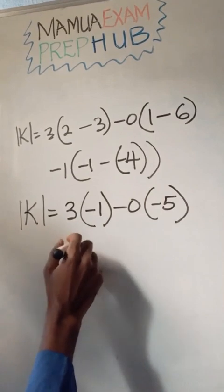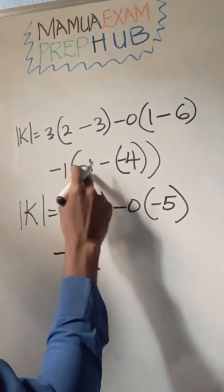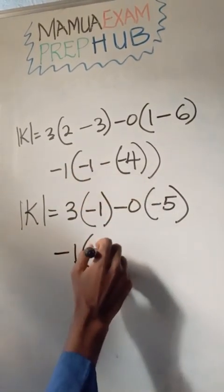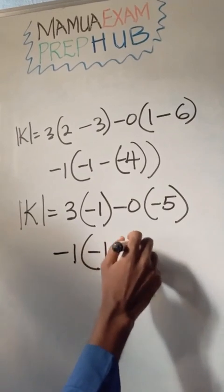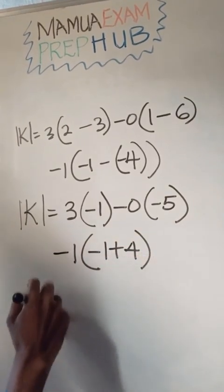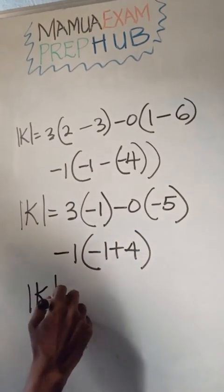And I have minus 1. Minus 1 is going to be plus. Minus 1 plus 4. So the determinant K is equal to...